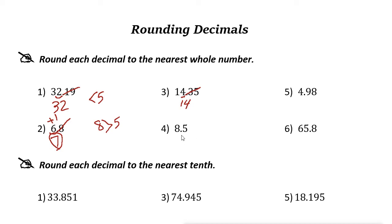Next one: 8.5. The digit 5 is not less than 5. For 5, remove everything after it and add 1 to the whole number. So the answer is 9 — 8.5 rounded to the whole number is 9.